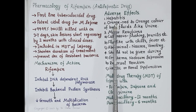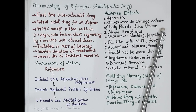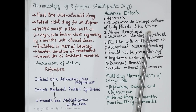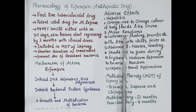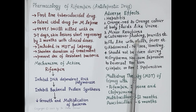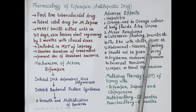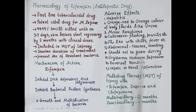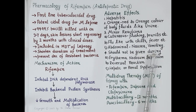Adverse effects of rifampin: hepatitis is the main adverse effect. Rifampin causes a characteristic orange-red color of body fluids like urine, saliva, and tears — this is harmless but the patient should be informed prior to starting therapy. Rifampin can also cause minor cutaneous skin reactions characterized by flushing and pruritus (itching), flu-like symptoms such as chills and fever, and abdominal symptoms like nausea and vomiting.